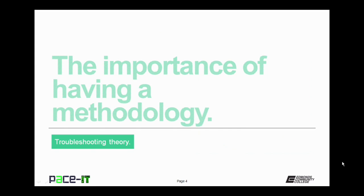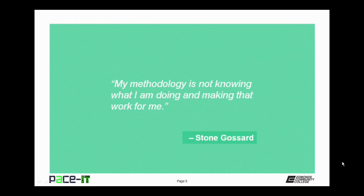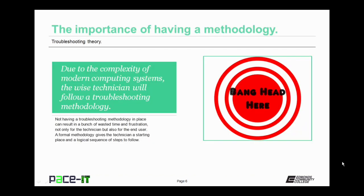We begin by talking about the importance of having a methodology. I like this quote by Stone Gossard from Pearl Jam: 'My methodology is not knowing what I'm doing and making that work for me.' Not everybody can do that, especially not in the tech world. Due to the complexity of modern computing systems, the wise technician will have and follow a troubleshooting methodology. Not having that methodology in place means you're much more likely to waste time and effort and create frustration not only for yourself, but also for your end user.